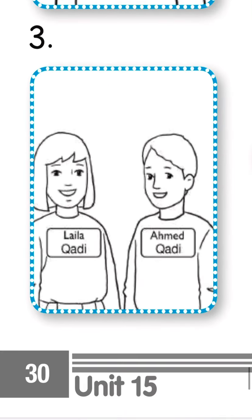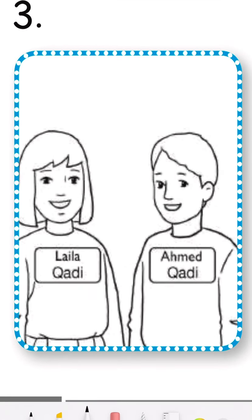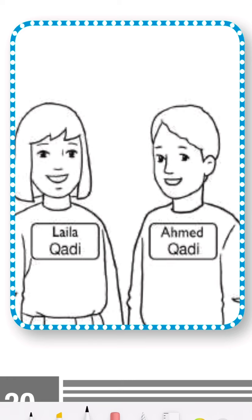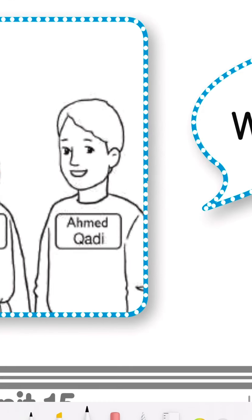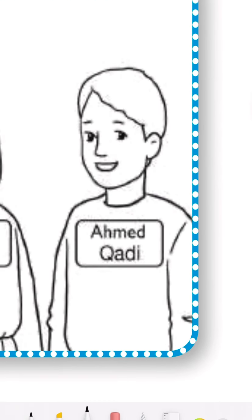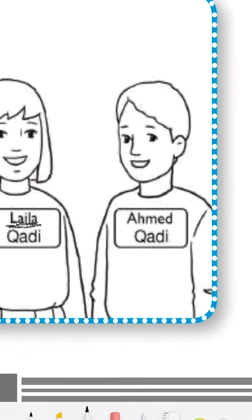And what about the third picture? We have a brother and his sister. Her name is Layla: L-A-I-L-A. And his name is Ahmed: A-H-M-E-D. Ahmed in Arabic. So, Layla and Ahmed.